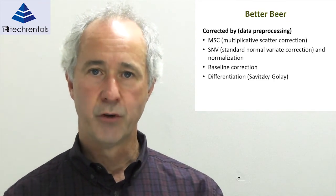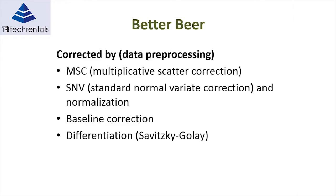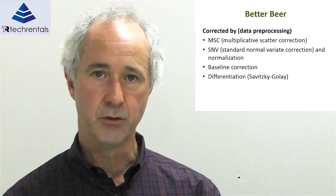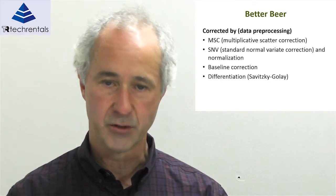How can we improve on Beer's Law to reduce errors? When we process data from the spectrometers, we pre-process it before analysis using multiplicative scatter correction. We can also use standard normal variate correction, baseline correction, second derivative, and first derivative. The Savitzky-Golay method is probably the most widely used differentiation process used in NIR spectroscopy.